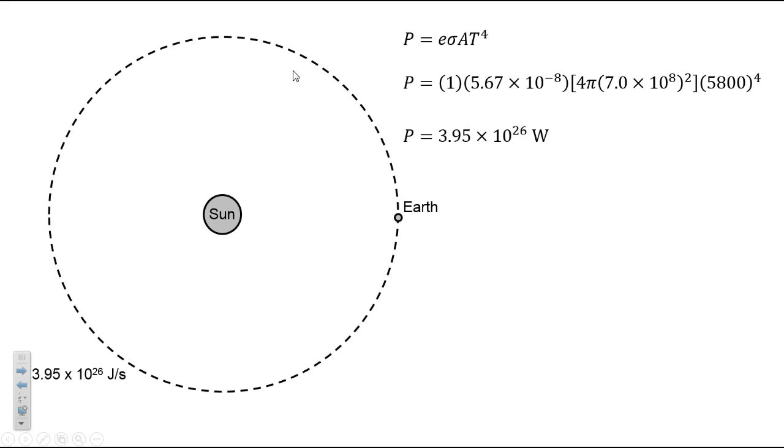When this energy, this power, reaches the Earth, it is much less intense, because it has spread out to a giant area. So, the intensity has dropped, and we could calculate it. We take the power, and we divide by the new area that the energy is spread across.